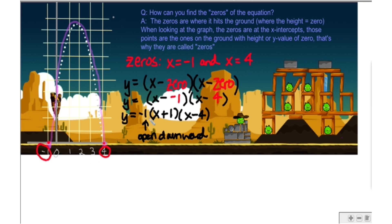And there would be the equation for this graph. y is equal to negative 1, because it opens downward, times x plus 1, because our first zero is negative 1, times x minus 4. So one thing I want you guys to notice here is why does x equals negative 1 and x equals 4 make this whole thing equal to zero. That's how you solve a quadratic equation.